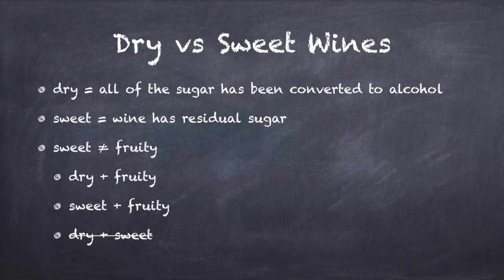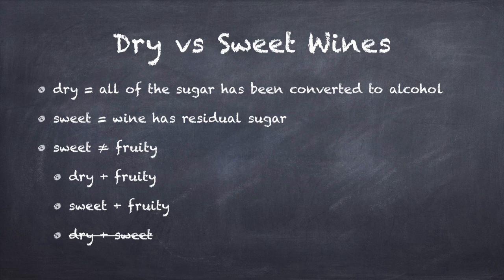Now, while we're discussing sugar, let's take a moment to understand how sugar affects the sweetness of a wine. You've probably heard of wines being described as either sweet or dry. These terms are really describing the amount of sugar remaining in the final wine. If all of the sugar in the grape is converted to alcohol during fermentation, then the wine is considered dry. But if some of the sugar remains behind after fermentation, then the wine has residual sugar, and it's considered sweet.